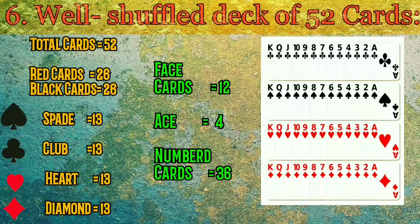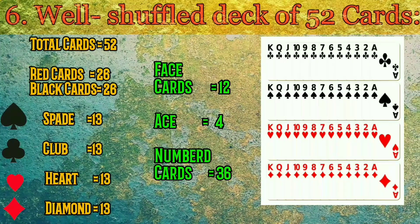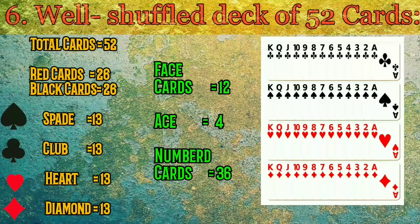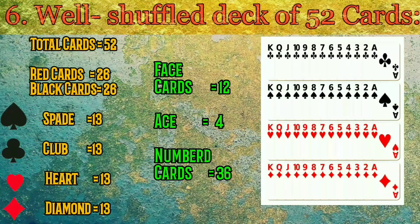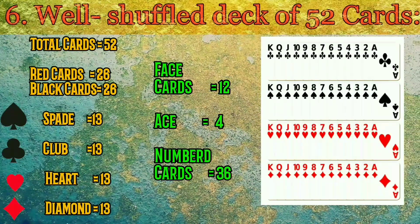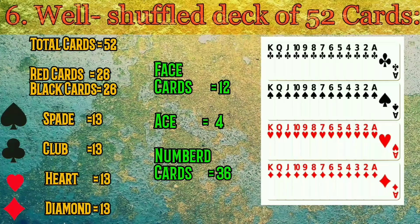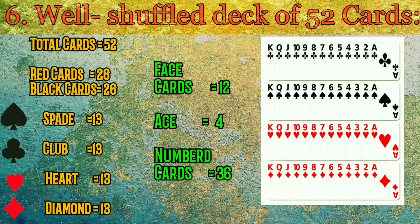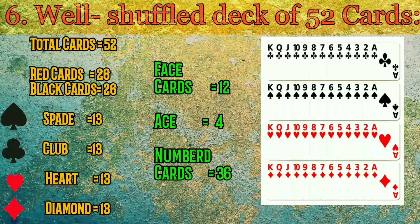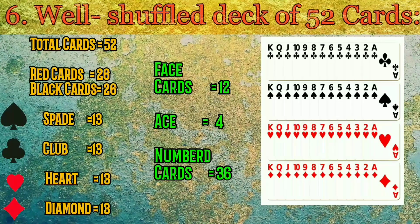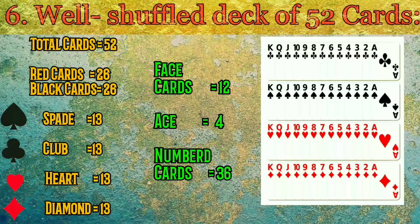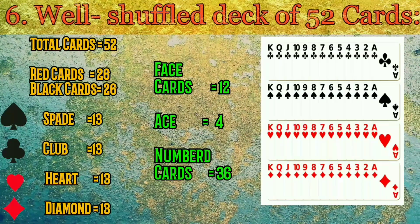Number six: one shuffled deck of 52 cards. In total we have 52 cards, of which 26 are black and 26 are red. Of the black cards, 13 are spades and 13 are clubs. Of the red cards, 13 are hearts and 13 are diamonds. In total there are 36 numbered cards (2 through 10), 12 face cards (Jack, Queen, King), and 4 Ace cards. This breakdown is very important when solving questions based on playing cards.